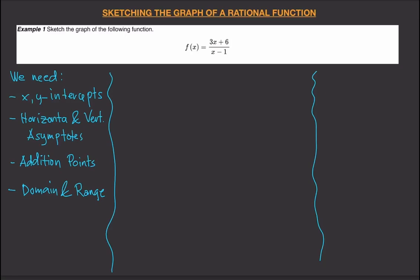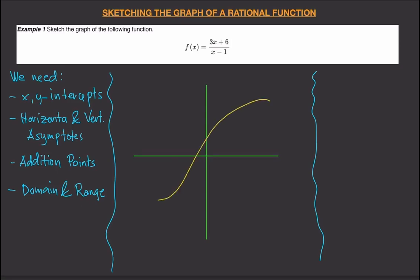The first thing we want to look at are the intercepts. The x-intercept is the point of the graph that intersects the x-axis. The y-intercept is the point that intersects the y-axis. For the y-intercept, the x-coordinate is zero; for the x-intercept, the y-coordinate is zero.